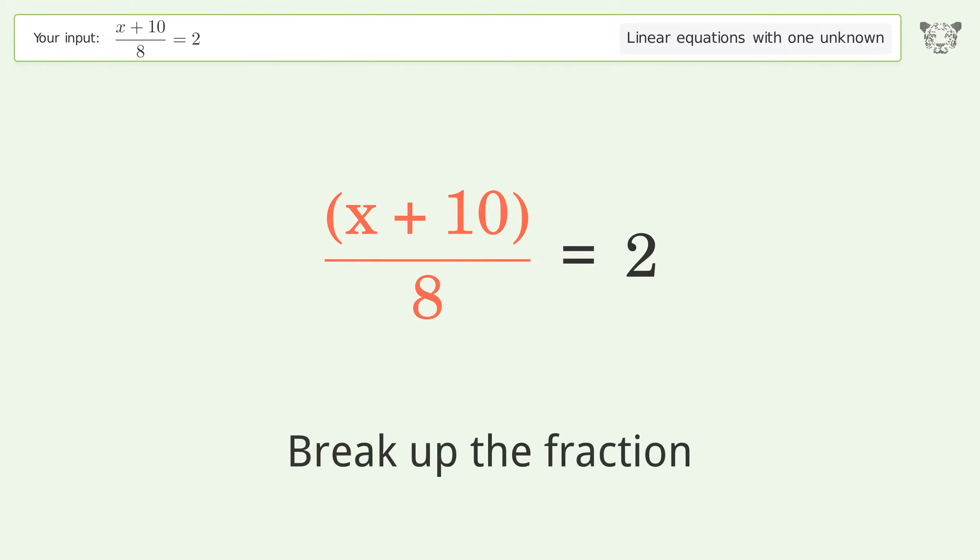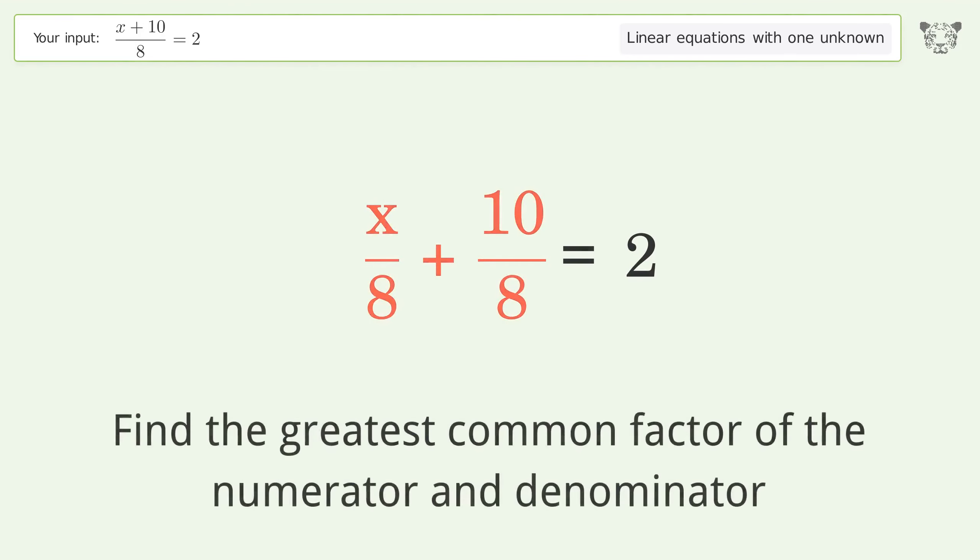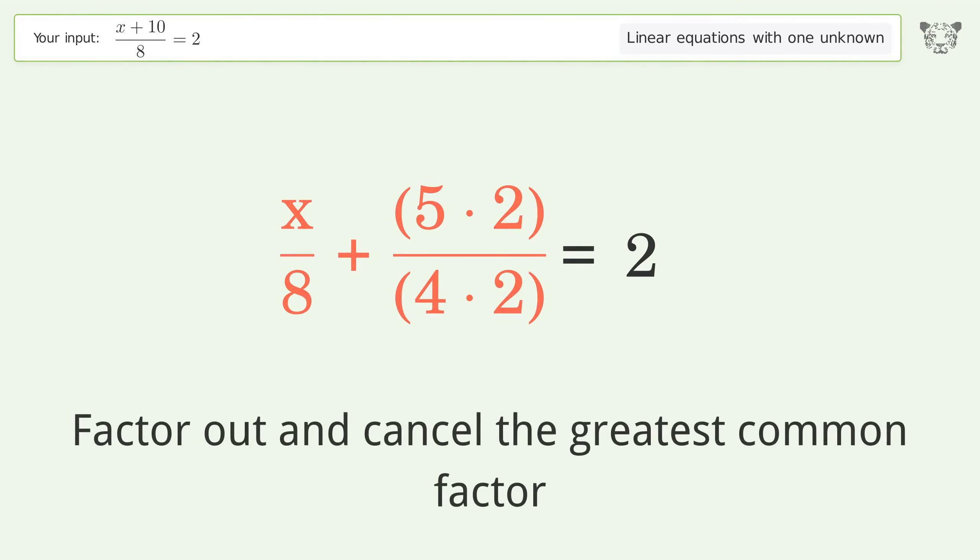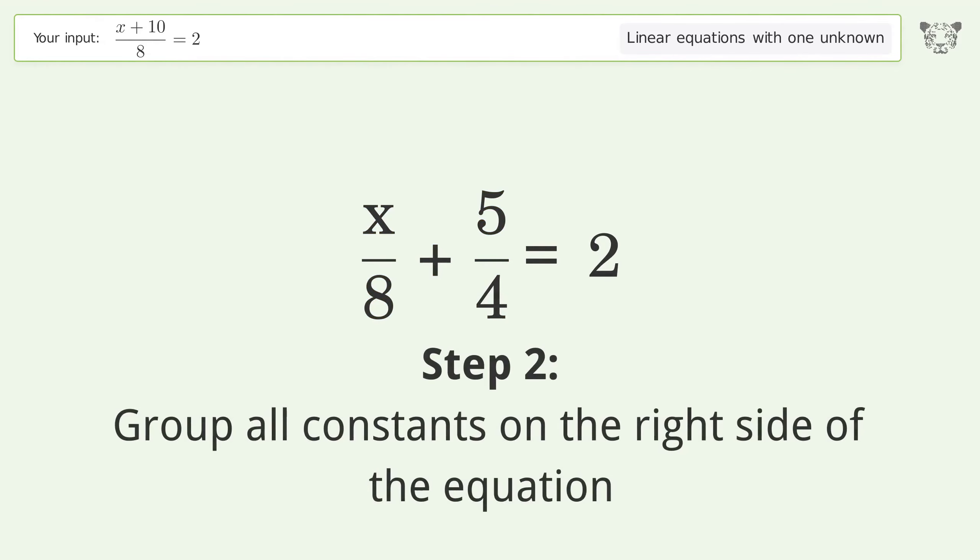Let's solve it step by step. Simplify the expression, break up the fraction, and find the greatest common factor of the numerator and denominator. Factor out and cancel the greatest common factor.